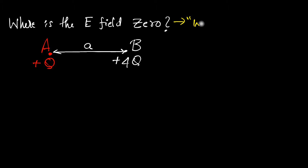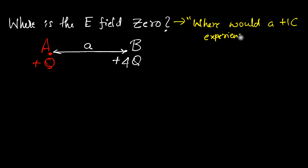Where would a plus one coulomb — actually, any charge would do — experience zero force? The coulomb is going to experience two forces: force due to charge A and force due to charge B. Two vectors can only cancel out provided they have the same magnitude, but more importantly, they should be in the opposite directions. And that helps us narrow down where that point could be.